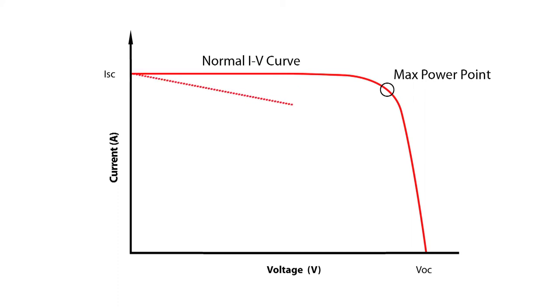For instance, the slope at the top of the curve will reveal possible shunt losses, and the slope at the right side of the curve will indicate the amount of series loss. Notches in the curve indicate mismatch, which can be caused by shading or other effects.